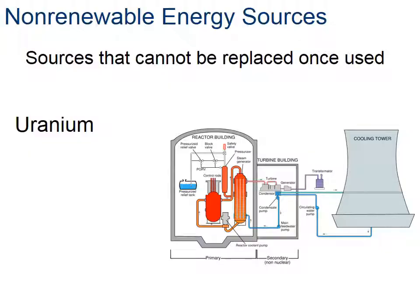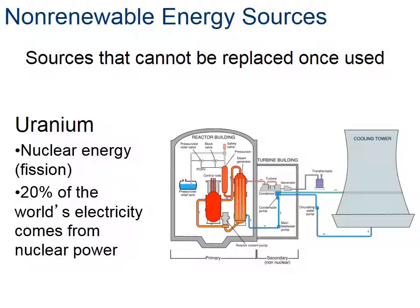Let's look at another non-renewable energy source: uranium. Uranium is most commonly used in nuclear energy, and about 20% of the world's electricity comes from nuclear power. Scientists have long thought that uranium, which is a heavy element, comes from exploding stars. In August of this year, scientists saw two neutron stars colliding and were actually able to physically see uranium being produced by that explosion - proving their theory. That is one of the most amazing things ever seen with a telescope.